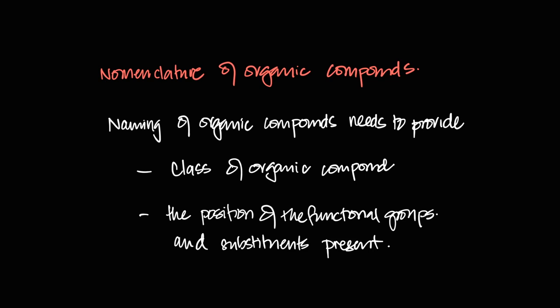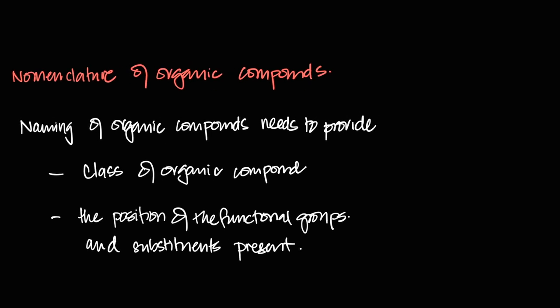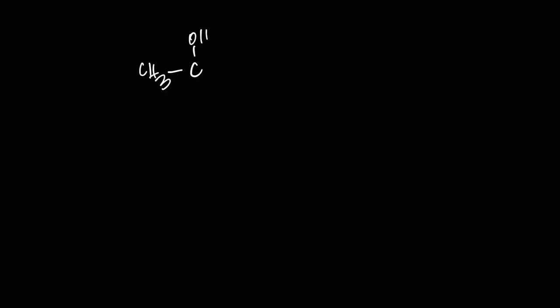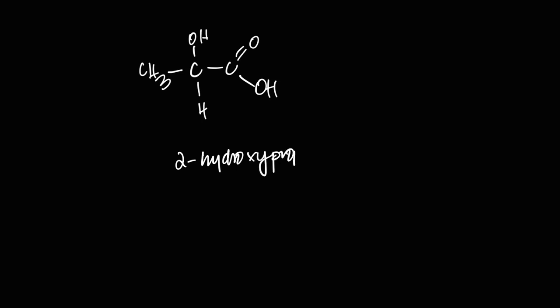For example, a name like 2-methylpropan-1-ol tells me exactly what the compound is. There's a molecule called lactic acid, also known as 2-hydroxypropanoic acid. When I say 2-hydroxypropanoic acid, I know exactly what the molecule would look like. Reading 2-hydroxypropanoic acid tells me it has a hydroxy group, an acid group, three carbons, and the hydroxy group is on carbon number two.